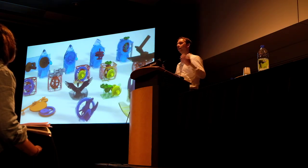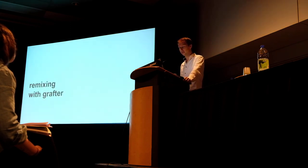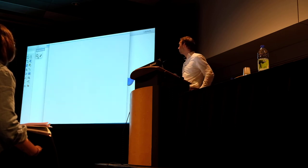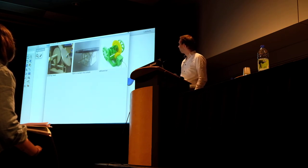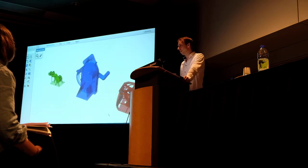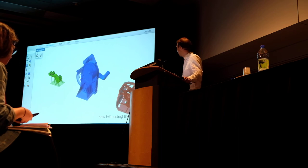We used this approach to create a large number of different remixes with this software system. Let's look at the centrifuge we've seen before and see how Grafter remixes this machine. We start with two models already loaded by the user, and we load a third — the bevel gear mechanism. Using a simple search query, we find the record player we've seen before and load it into our software. The next thing we need to do is take a mechanism out of that record player.